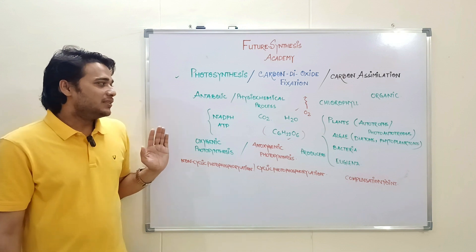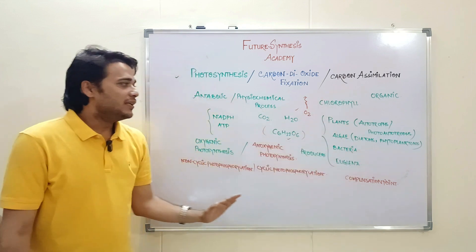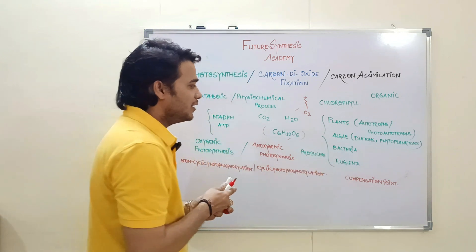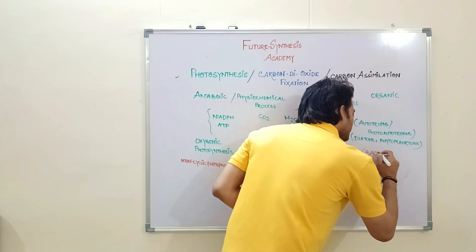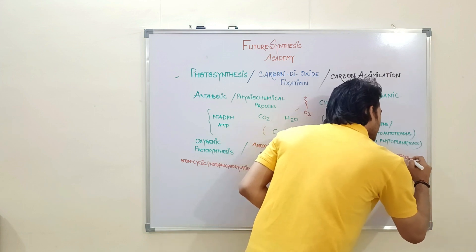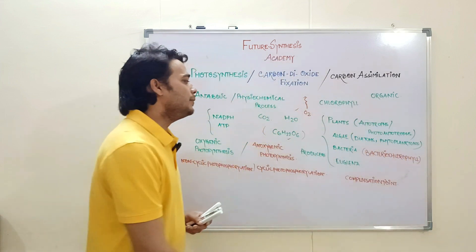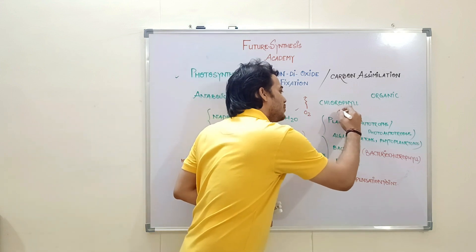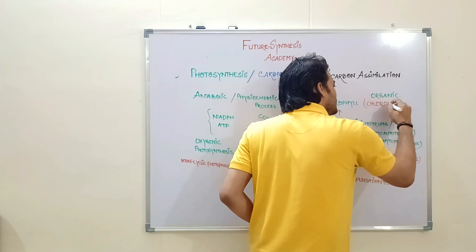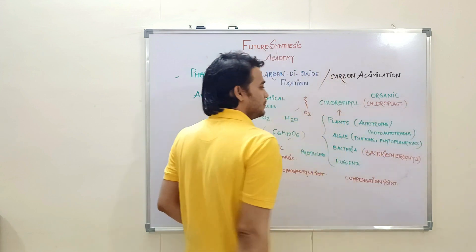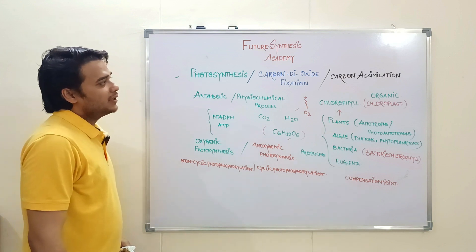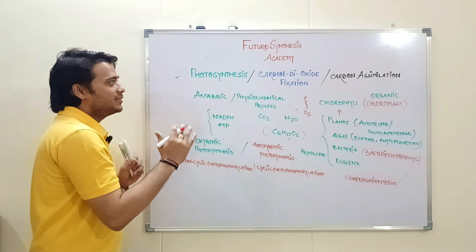There are certain bacteria which have bacterial chlorophyll, and then there are plants which have the chlorophyll molecule, and this chlorophyll molecule is present in the chloroplast. In this way, I tried to summarize photosynthesis and the various things which are happening during this process.